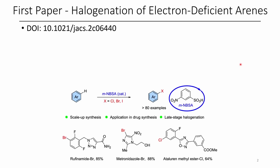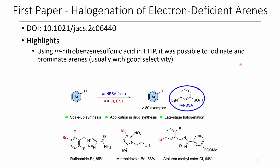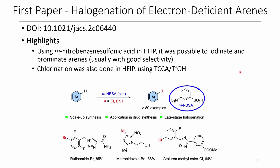In the first paper, we have the halogenation of electron-deficient arenes. Some highlights include the use of meta-nitrobenzene sulfonic acid in hexafluoroisopropanol to do bromination and iodination. Additionally, they were able to do chlorination in hexafluoroisopropanol, however in this case they had to use triflic acid as their activator.